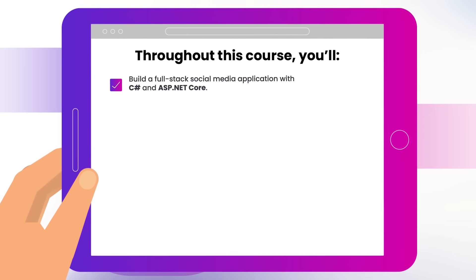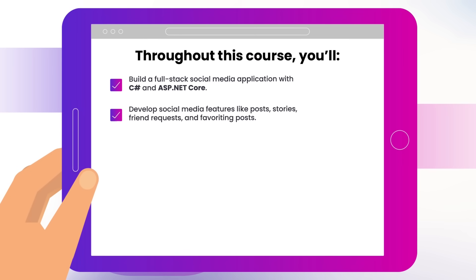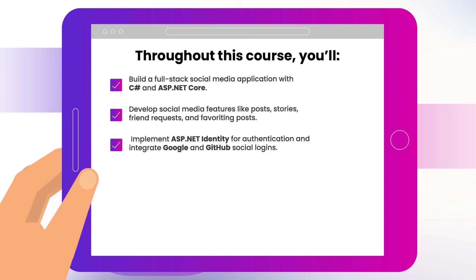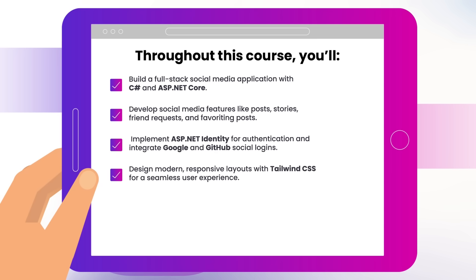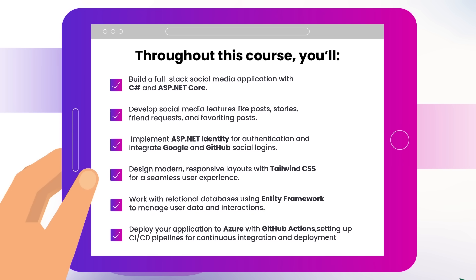You'll learn how to build a full-stack social media app with C# and ASP.NET Core, develop social media features like posts, stories, friend requests, and favoriting posts, implement ASP.NET Identity for authentication and integrate Google and GitHub social logins, design a modern responsive layout with Tailwind CSS, work with a SQL database using Entity Framework to manage user data and post interactions, and deploy your app to Azure with GitHub Actions, setting up CI/CD pipelines for continuous integration and deployment.